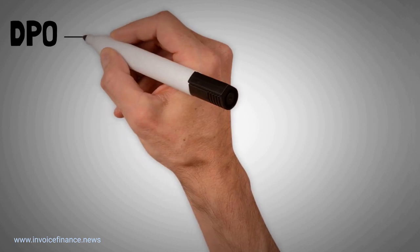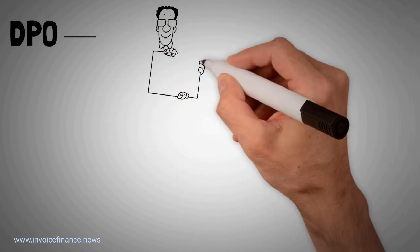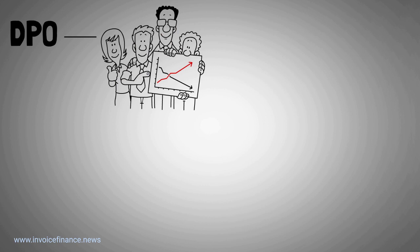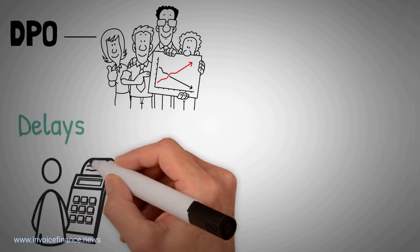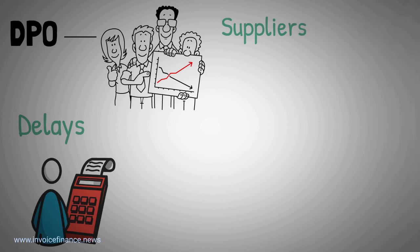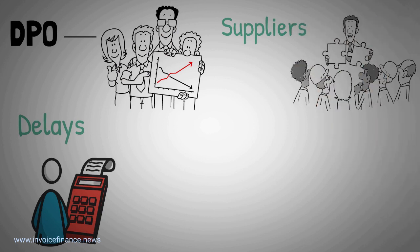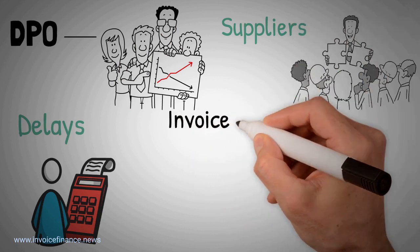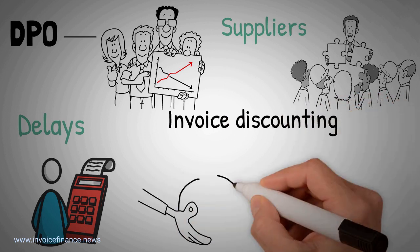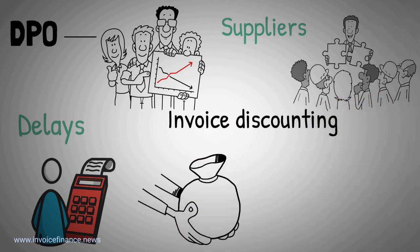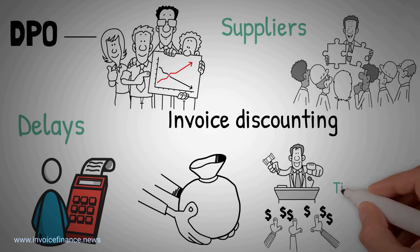As has been mentioned, DPO can be a bone of contention. A big company that uses its size to bully smaller companies supplying them to accept long delays in payment is not going to be popular. However, a company can work with its suppliers, perhaps by participating in an early payment scheme such as invoice discounting. In this system, a factoring company pays the supplier immediately and gives the buyer a longer period of time to settle the account.